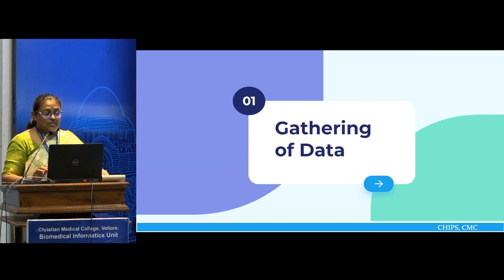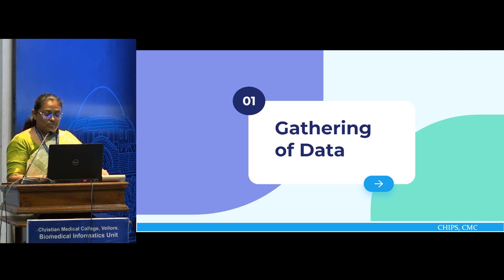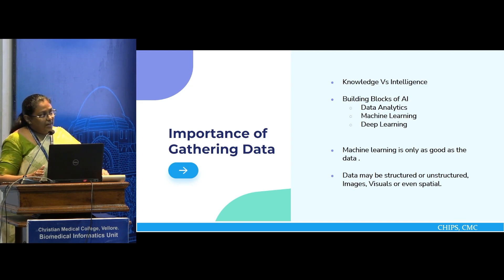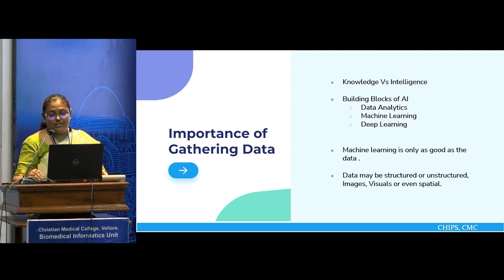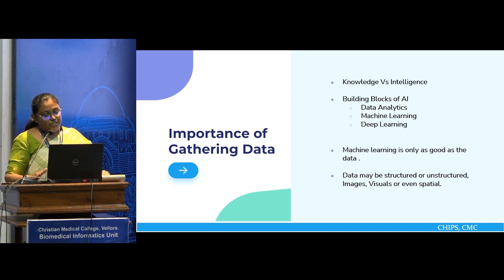Before starting the discussion on gathering of data, I'd like to stress on the importance of gathering data. What is knowledge versus what is intelligence? Knowledge is something that we have gained over a period of years through our experience by reading books and interacting with people. When we apply this knowledge, it becomes intelligence. Similarly, the building blocks of AI are data analytics, based on which machine learning works, and then we have deep learning. In case of machine learning, it's going to be only as good as the data that it gets and the algorithm's ability to consume it.